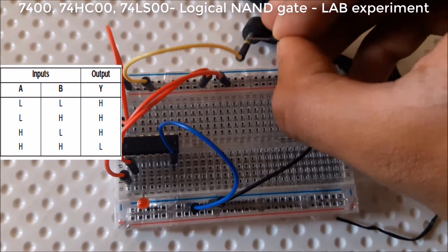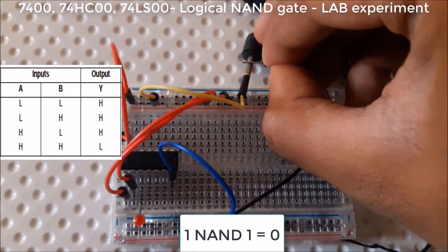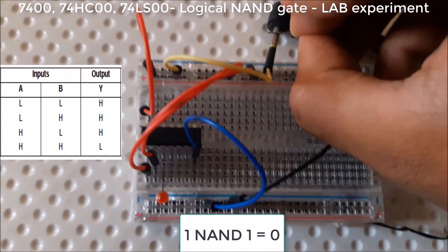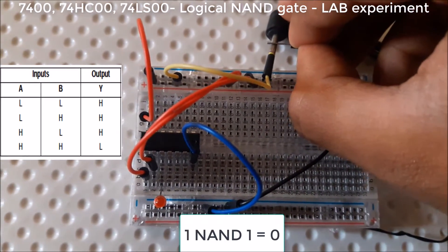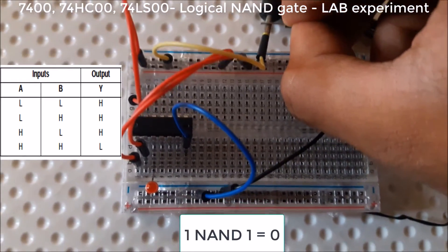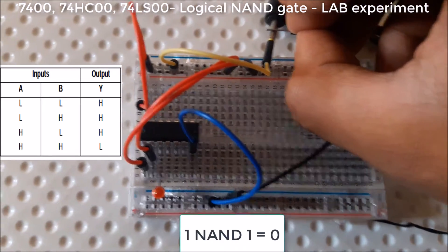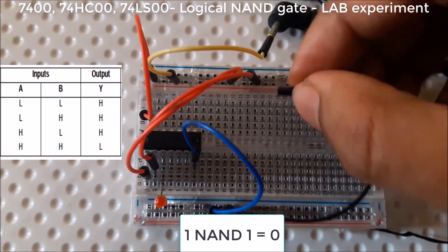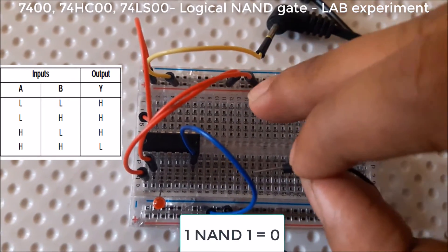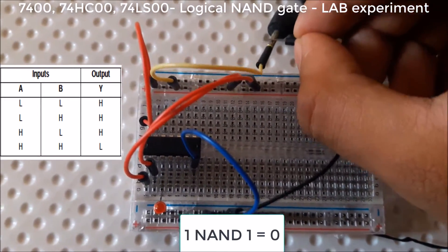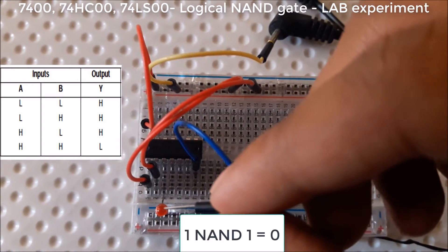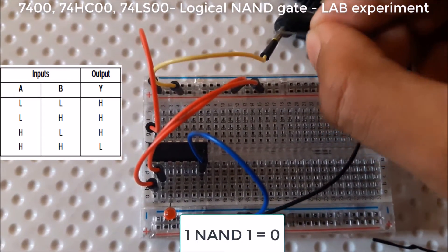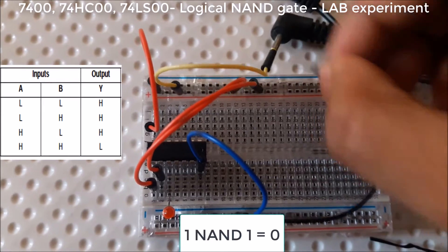So 1 and 1 is not giving anything. 1 and 1 equals 0. In NAND gate, when we're giving input with these two input pins as 1 and 1, that is 5 volts, this LED is not blinking. So 1 and 1 equals 0.